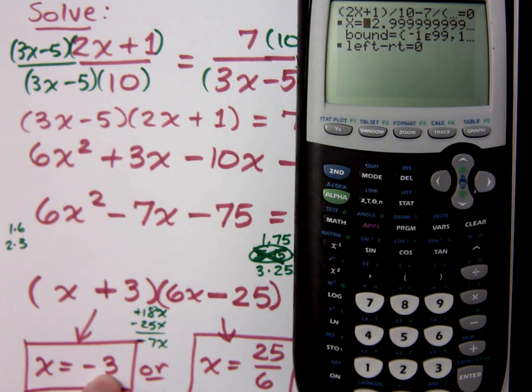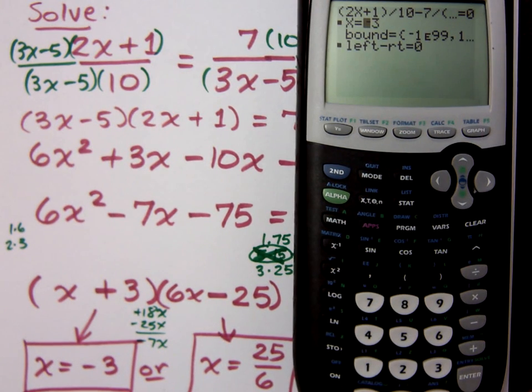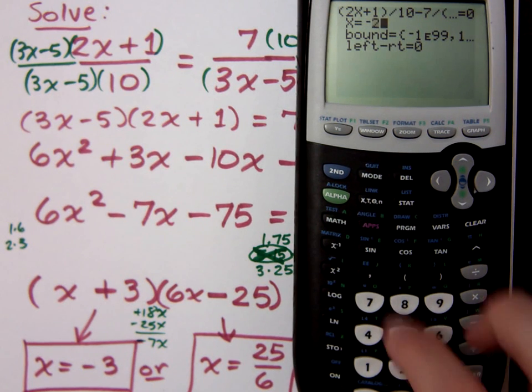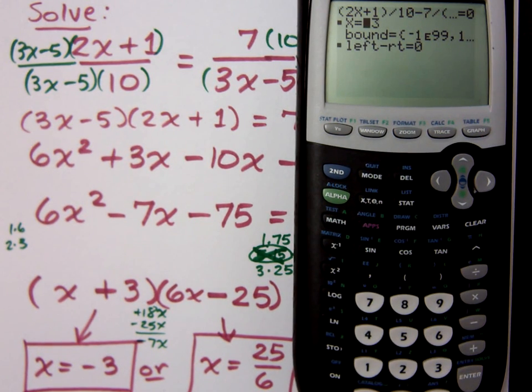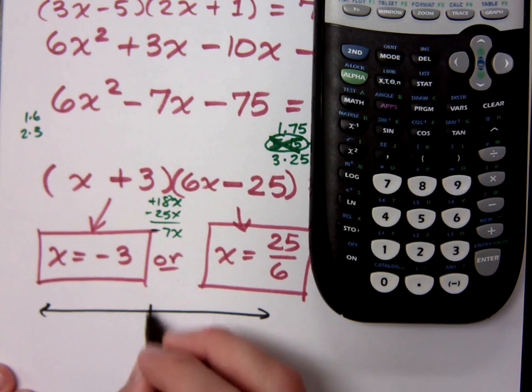Because here's the thing. If I just do this, if I do 0, and I solve what's the solution closest to 0, it tells me negative 3. Well, how do I know where the other solution is? Let me try negative 2 and solve what's the closest one to negative 2. I still get negative 3. So if I'm looking at the number line, here's 0. I've got a solution that's negative 3, and I've got one that's 25 over 6.